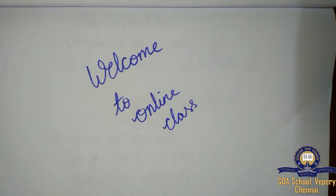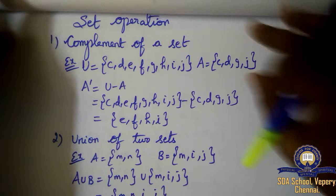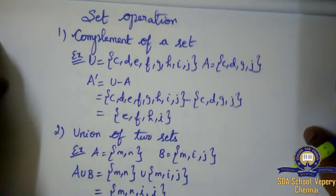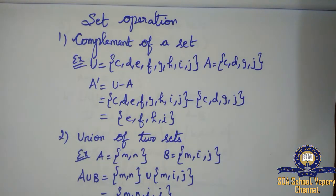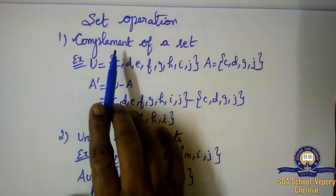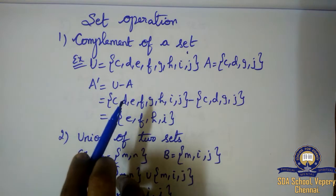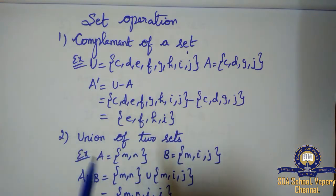Then we have seen complement of a set. We will just have a recap and then we will go to Exercise 1.3. In Exercise 1.3, we are going to learn about 4 subdivisions. We have already seen the complement of a set in the last session, so we will just have a recap.